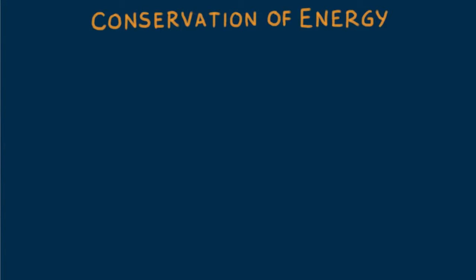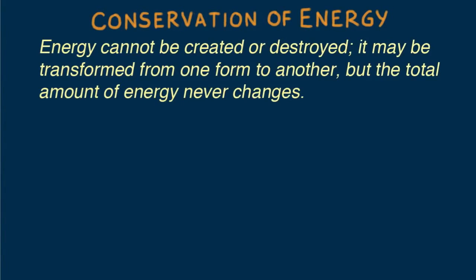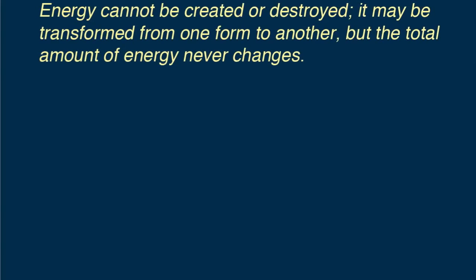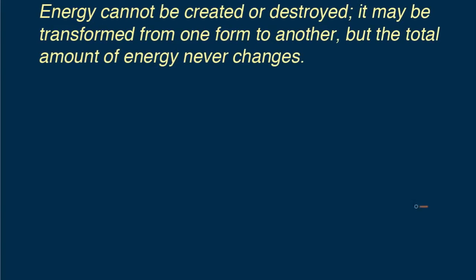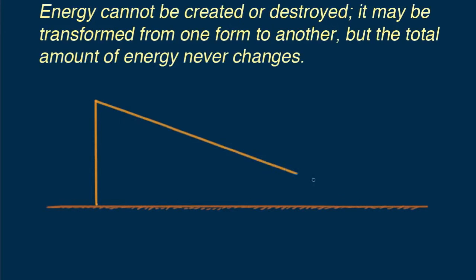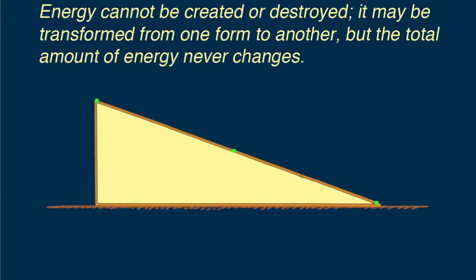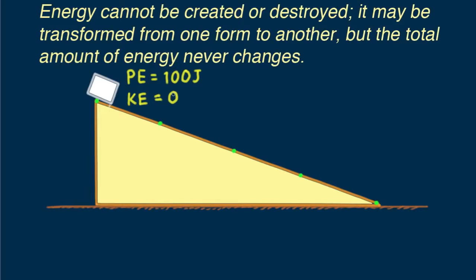A major foundation in physics that extends to all the sciences is the conservation of energy, which states: energy cannot be created or destroyed — it may be transformed from one form to another, but the total amount of energy never changes. Consider the energy states of a block of ice sliding down an inclined plane. We start by doing 100 joules of work to lift the block to the top of the incline. At that location, its potential energy is 100 joules and kinetic energy is zero.